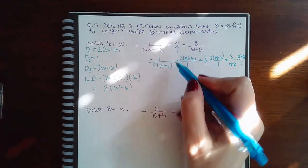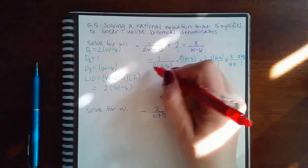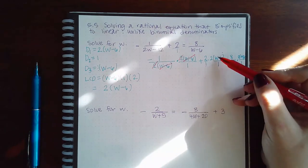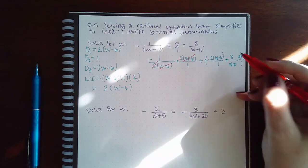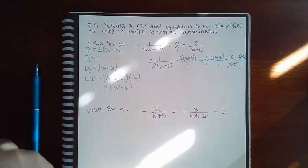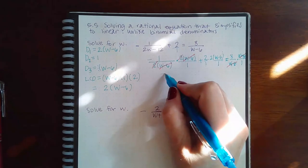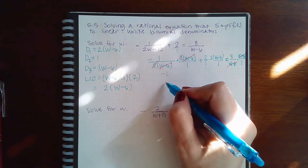So here the 2s will cancel and the W minus 6s will cancel. Here nothing will cancel and here the W minus 6s will cancel. So what am I left with? In the first fraction, I'm just left with negative 1 over 1, which is negative 1.